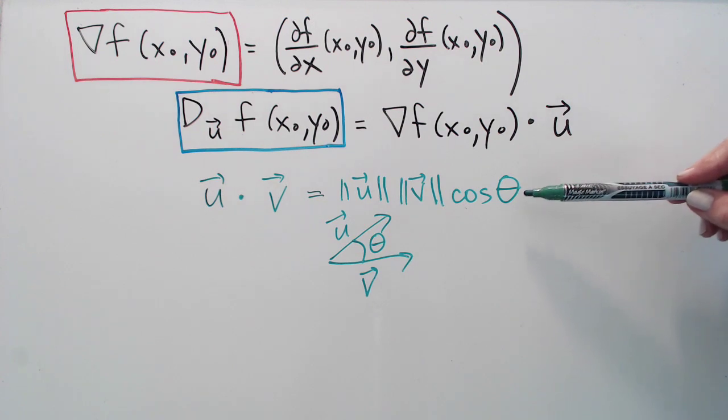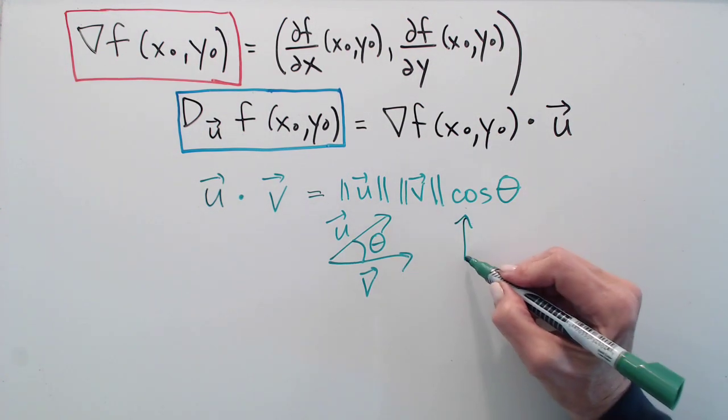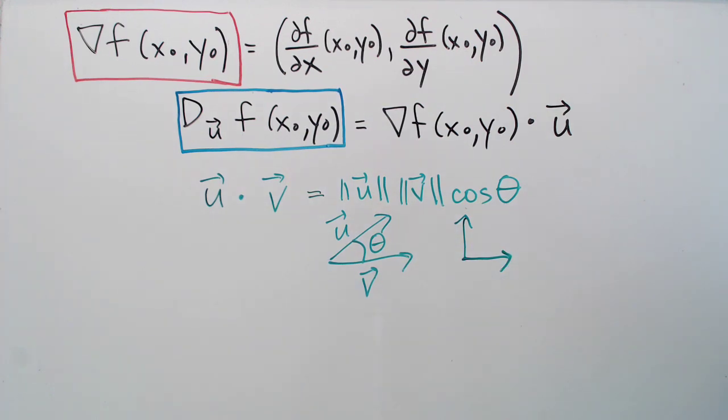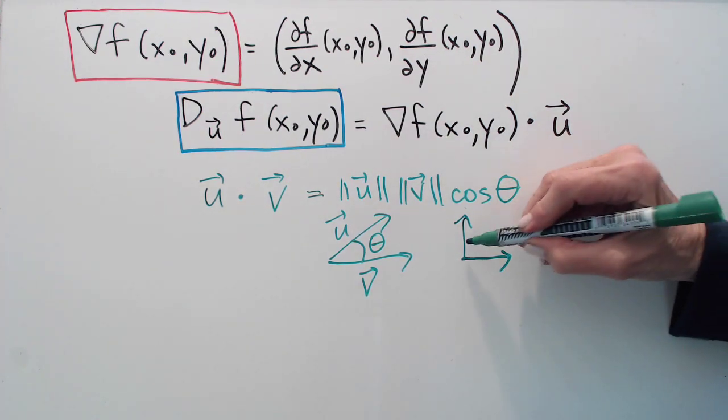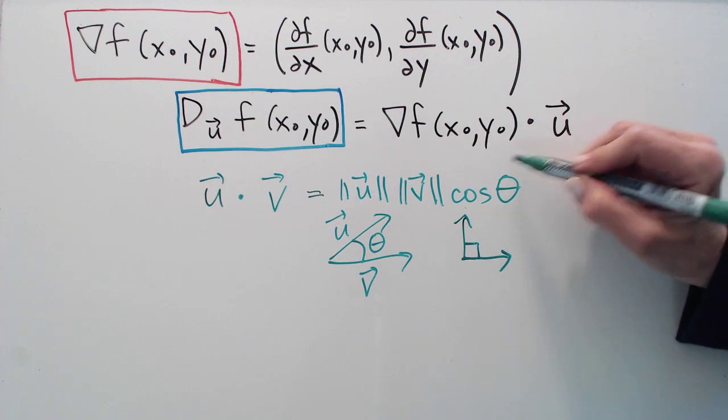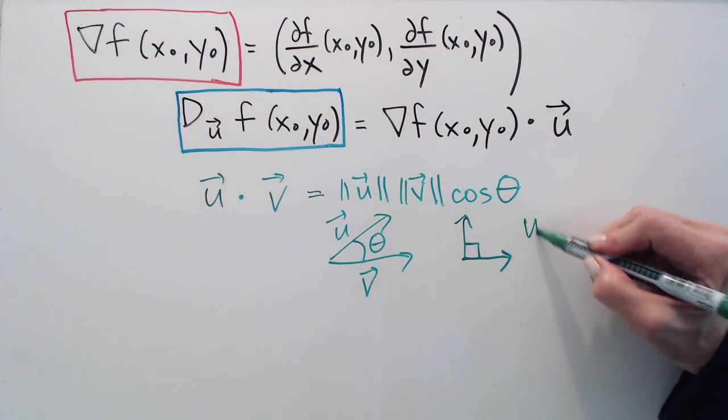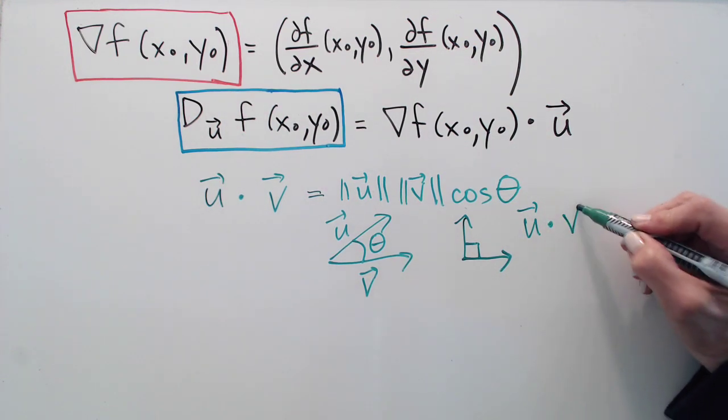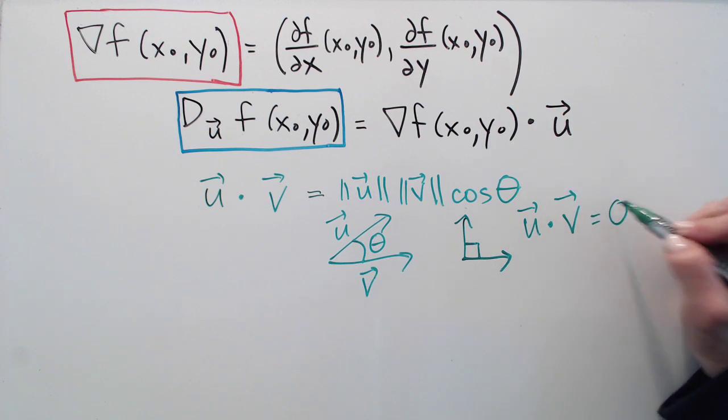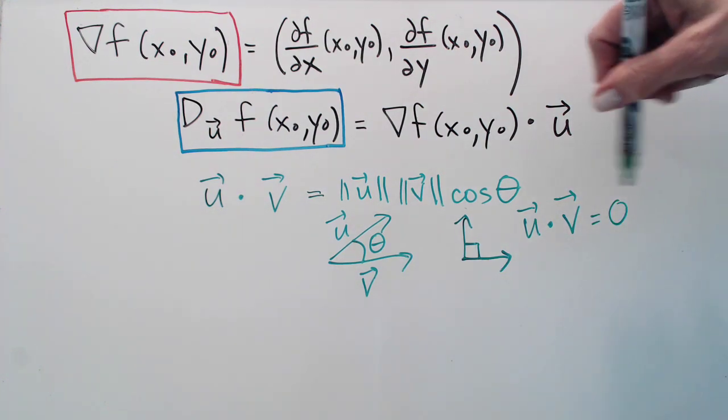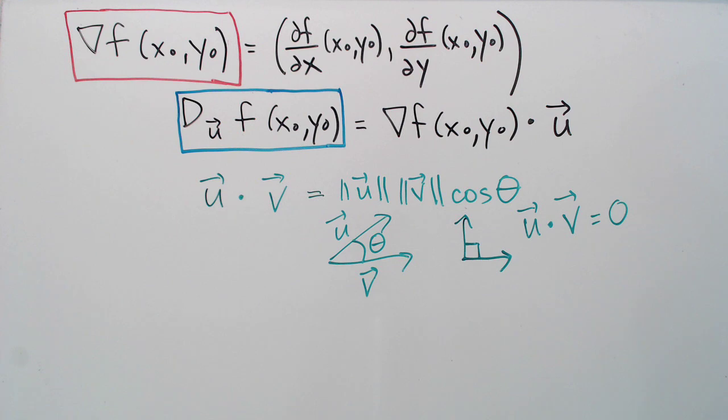This is particularly useful because when two vectors are perpendicular or orthogonal then the angle between them is 90 degrees, so the cosine is zero. In the case of perpendicular vectors the dot product is zero and it goes the other way. If the dot product of two vectors is zero, we know that they must be perpendicular.